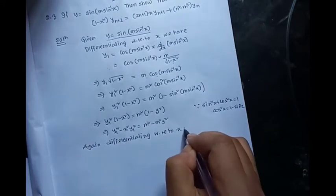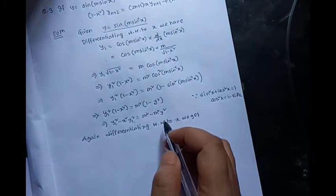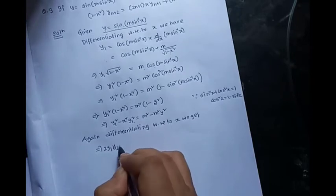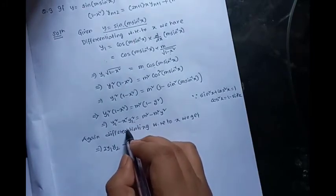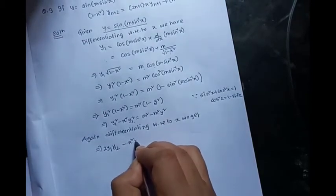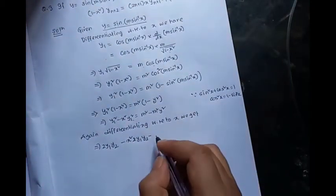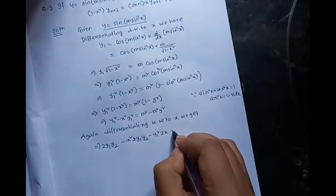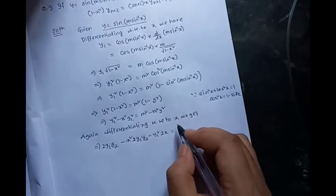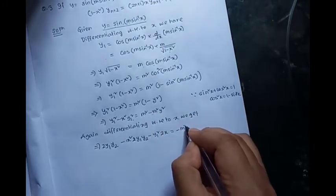Differentiating both sides with respect to x, on the left hand side we get twice y₁·y₂ times (1 minus x squared), and using the product rule on x squared times y₁ squared, we get x squared times twice y₁·y₂ minus twice x times y₁ squared. On the right hand side, m squared is a constant so the derivative of negative m squared y squared gives minus m squared times twice y·y₁.